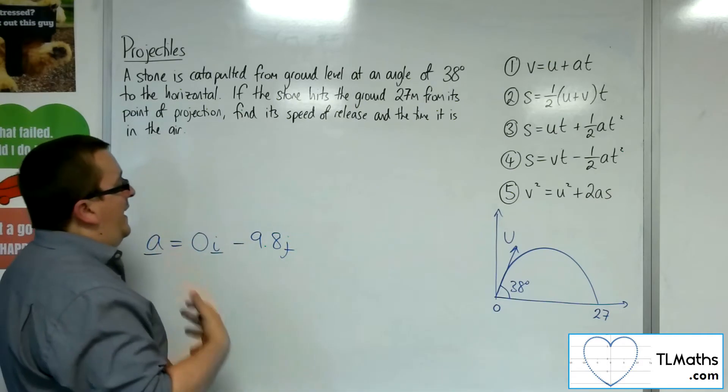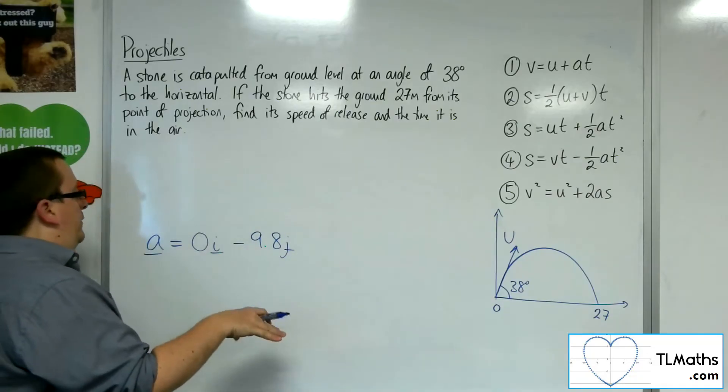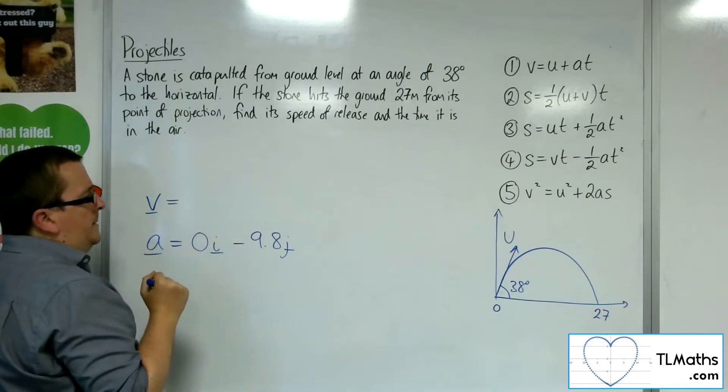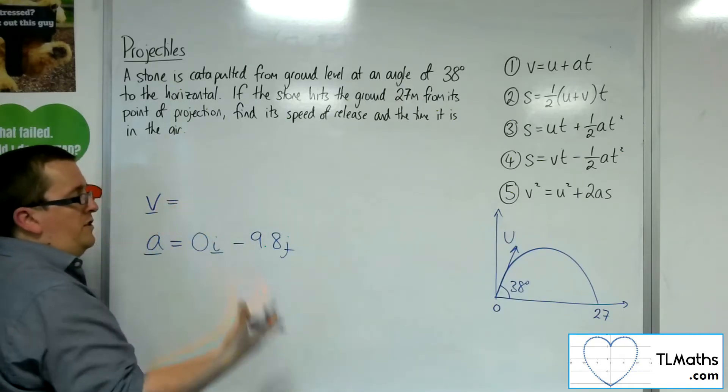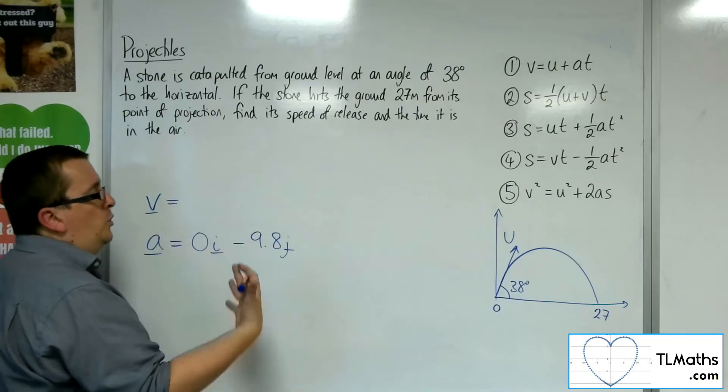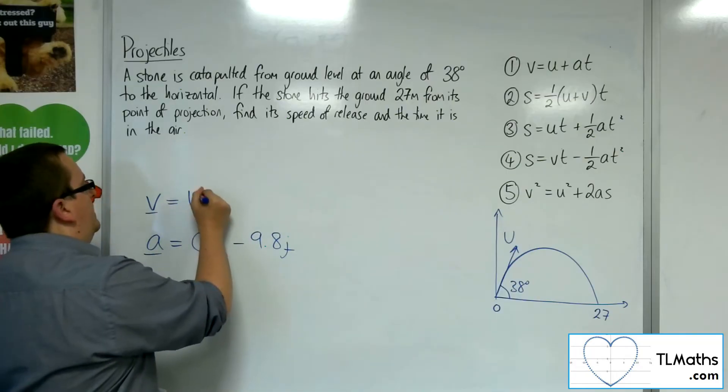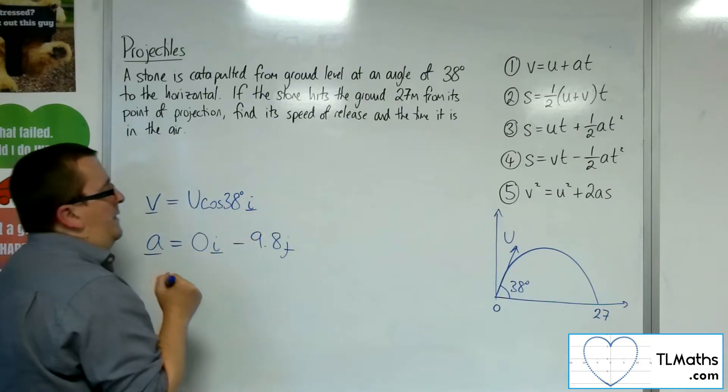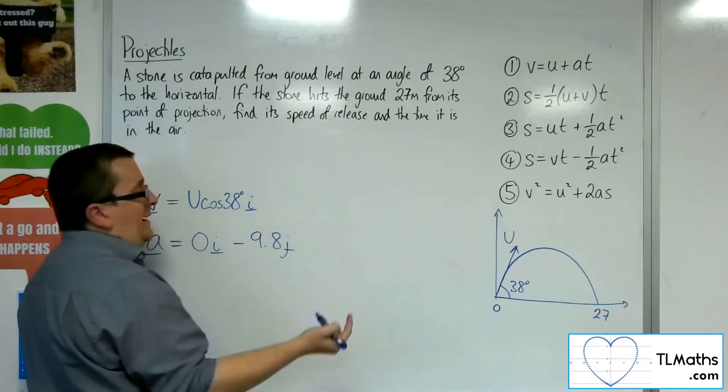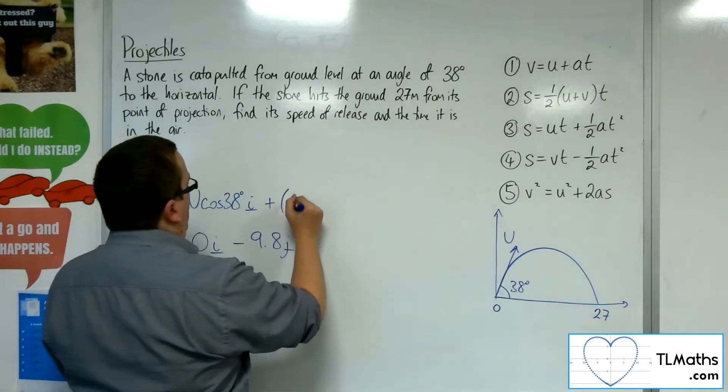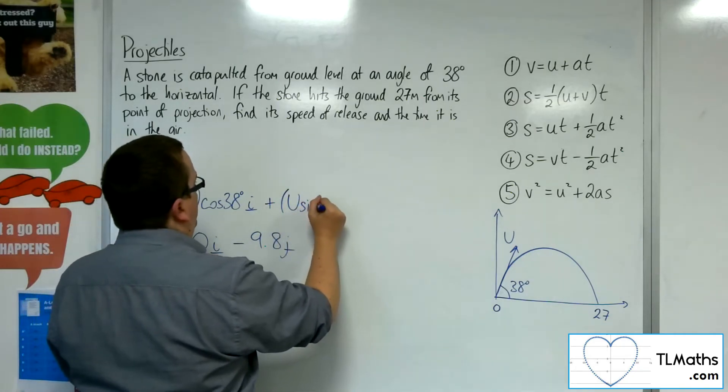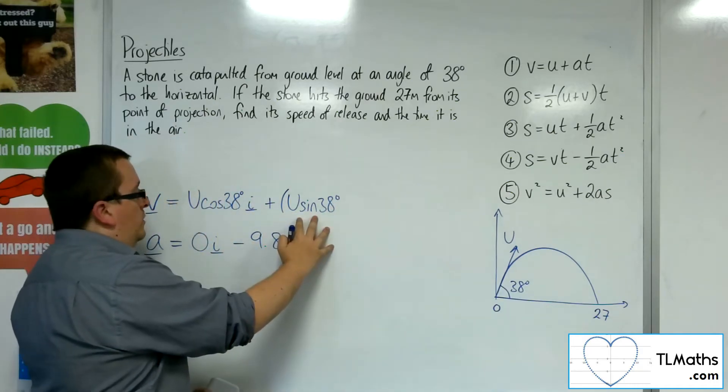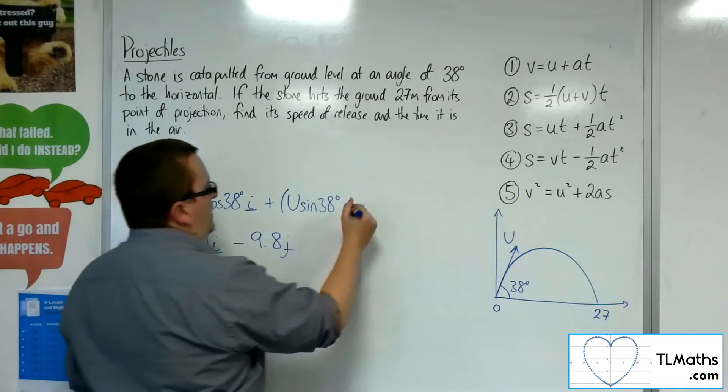So now we integrate and add in the initial conditions. So velocity. Now the velocity, 0 integrates to a constant. So u cosine 38 i. And then integrating this but adding in the initial conditions. So we're going to get u sine 38 as the initial condition for the velocity in the vertical component. Take away 9.8t.